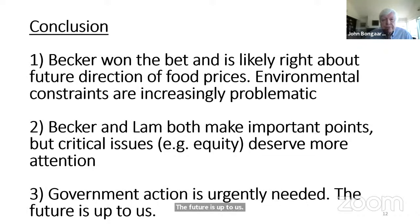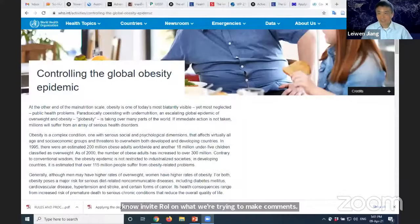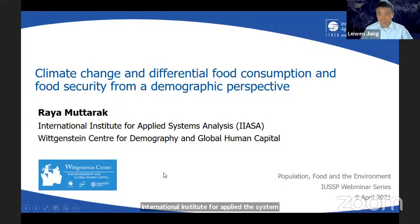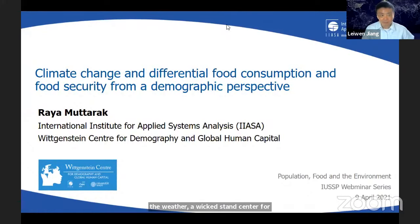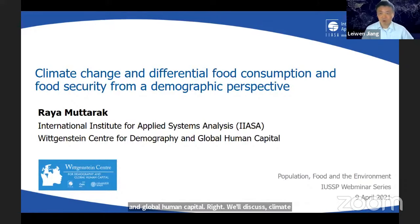My conclusion: Becker won the bet, and my guess is that he's likely right about the future direction of food prices — that is also the view of the IPCC, largely due to environmental constraints and rising marginal costs as we grow more and more food. Becker and Lam both make important points, but critical issues are missing — in particular, equity. Government action is urgently needed to limit environmental destruction and to ensure a growing food supply. The future is up to us. Thank you. We now invite Raya Muturek to make comments.